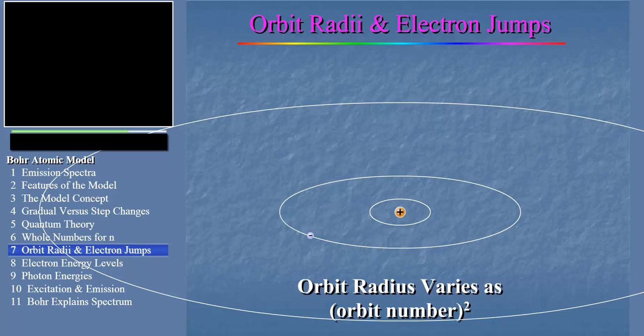So, the electron ends up in a higher than normal orbit, and we say that it's in the excited state.